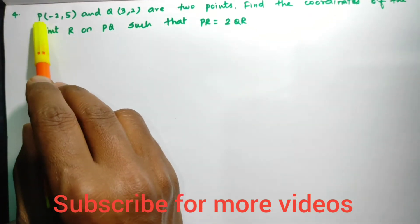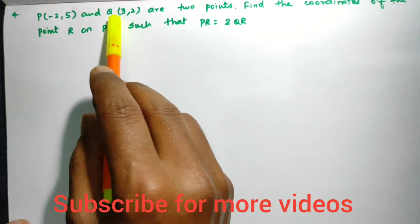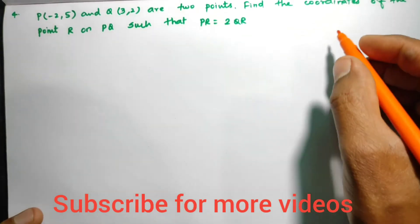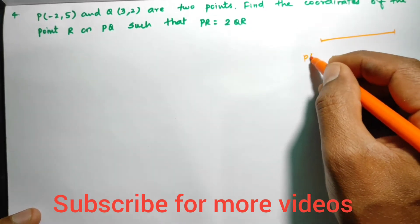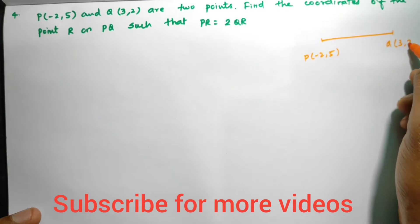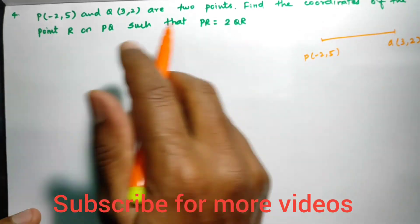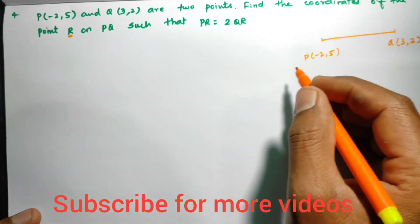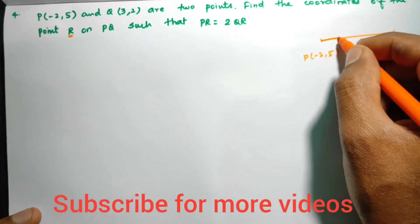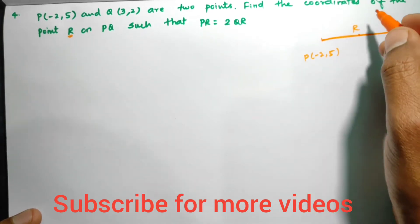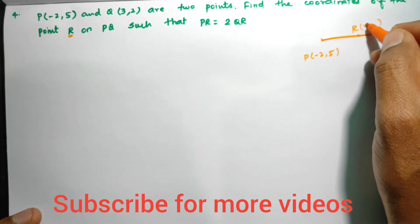We have P(-2, 5) and Q(3, 2) as two points. Find the coordinates of point R on PQ. So PQ is one line segment. Let us take point P here at (-2, 5) and point Q at (3, 2). We have to find the coordinates of point R on the PQ line segment.